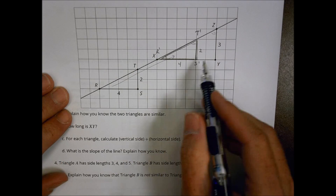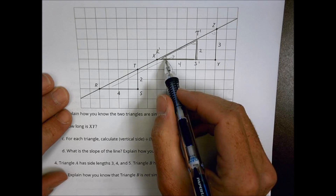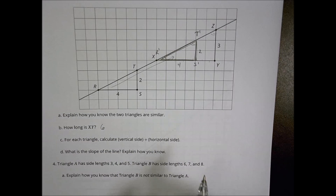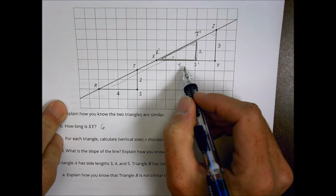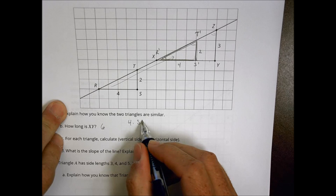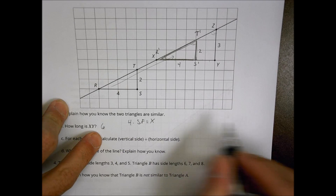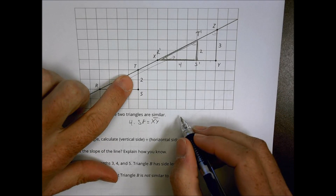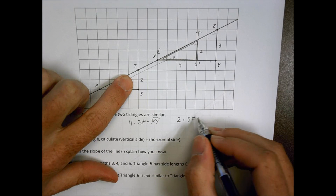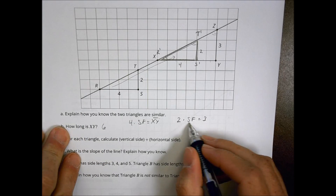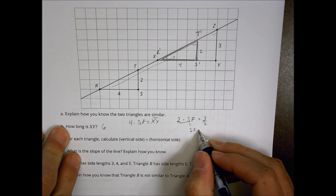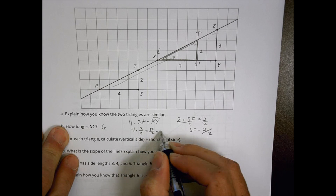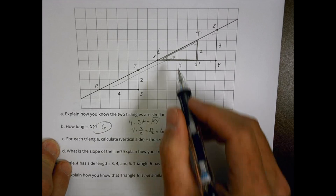Now, the question is: how long is XY? XY is this length here — measuring it gives six. We can also solve it using the scale factor: TS is two, and two times the scale factor gives three, so the scale factor is three-halves. Then four times three-halves equals 12 over two, which equals six. That proves the answer rather than just counting the squares.